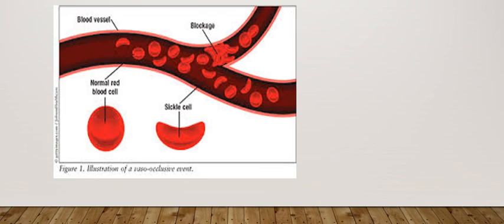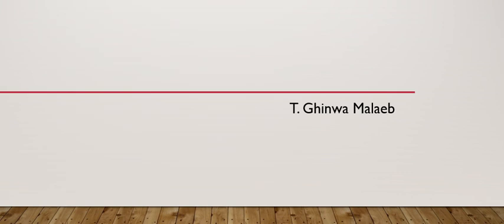This figure also shows how normal red blood cells can traverse normally across the arteries and capillaries and perform their functions, while sickle red blood cells cause blockage of the artery, fail to carry oxygen, and lead to respiratory problems for the individual. Thank you very much.